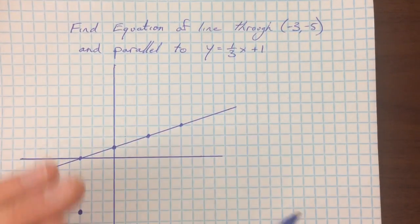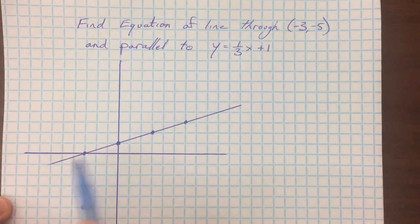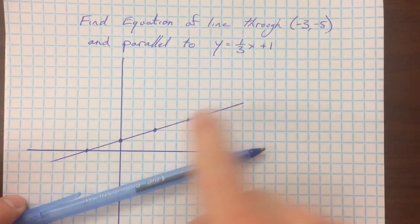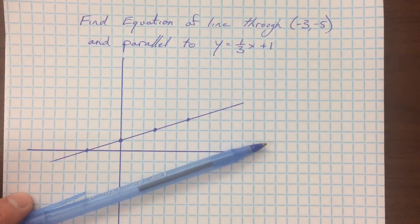Parallel meaning two lines that don't cross. And so we can imagine that our line is going to look something like this, two lines that are never ever going to intersect.